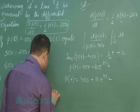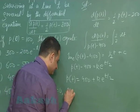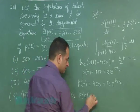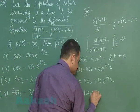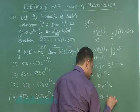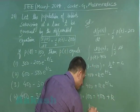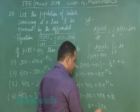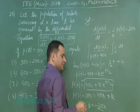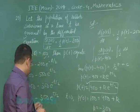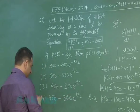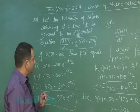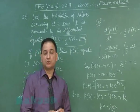At t = 0, the initial population is 100. From here we can find the value of k, which is equal to -300. Putting k = -300 into the equation, we can see the correct option is option number 4. This is the correct answer.